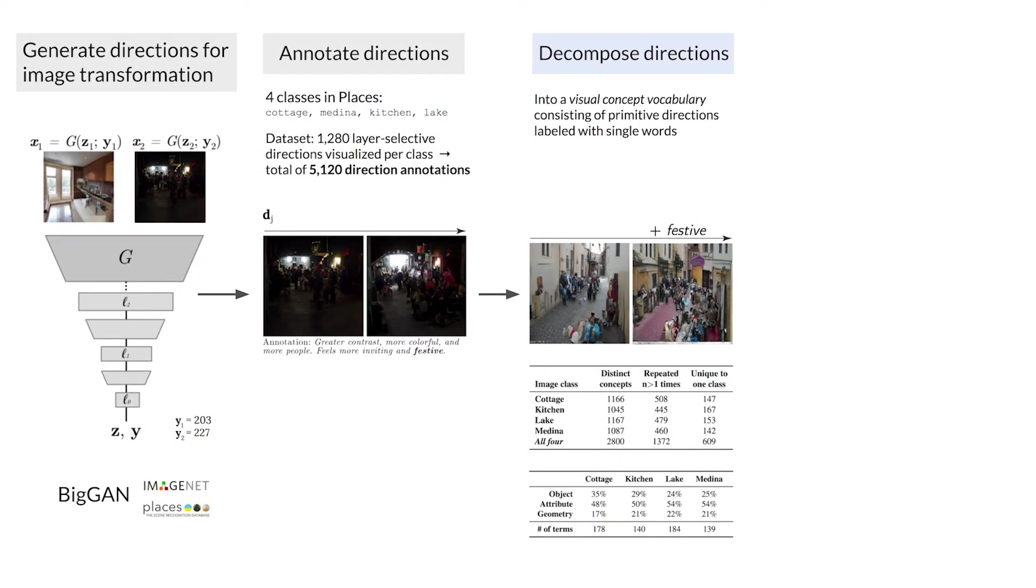After constructing our vocabulary, we ask how well the directions produce transformations that are faithful to their descriptions in newly generated images. In three experiments, we show that these concepts generalize across images and observers, and reliably compose.